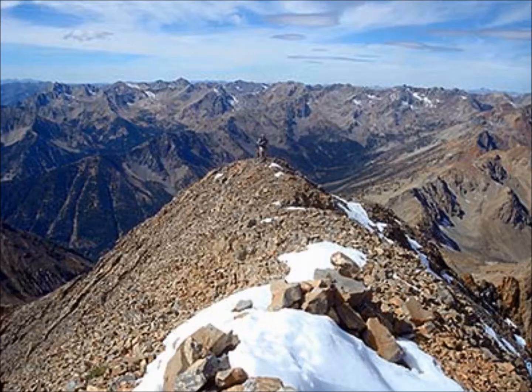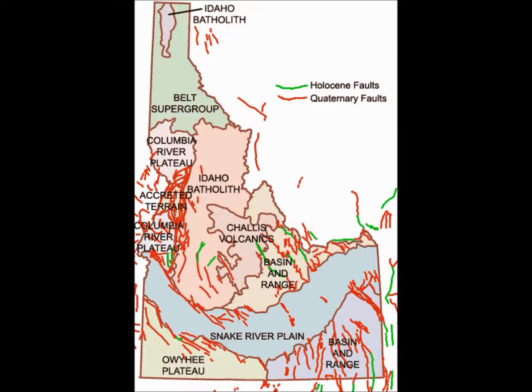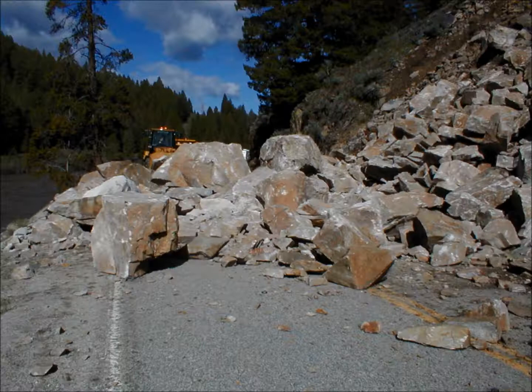The Idaho Batholith itself is a relatively benign geologic formation, so there aren't any potential hazards associated with the frozen plutons themselves. The activity which formed and shaped the batholith has all but subsided, but the region is still littered with active fault lines such as the Bear Valley Fault and the Sawtooth Fault. Falling rock and rock slides do occur along roads and highways that have been built and cut through the granite rock, butting right up against unstable cliff faces and walls. The picture shows a rock slide that buried an entire highway near Banks, Idaho on Highway 55.